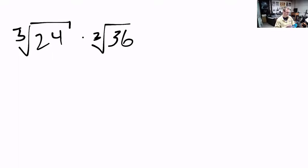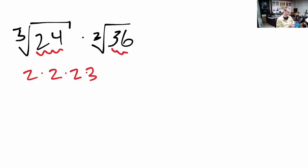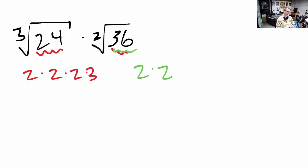What we're going to do is look at what's inside and factor these things. So we've got 24. 24 is equal to 2 times 2 times 2 times 3 — so 2 cubed times 3. And 36 is 2 times 18, which is 2 times 9, which is 2 times 3 times 3 — so 2 times 3 squared.